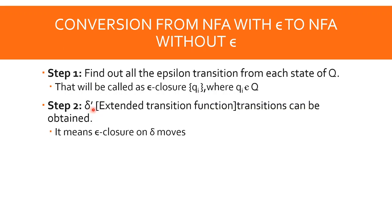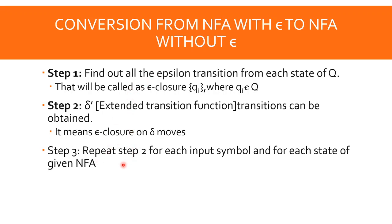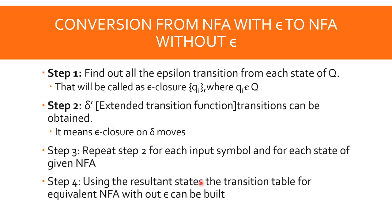Next, delta-dash is the extended transition function. We first learn delta — the transition function — then delta-dash, which is the extended version. Delta-dash transitions can be obtained using epsilon closure on delta moves. Step 3: repeat Step 2 for each input symbol and for each state of the given NFA. Using the resultant states, the transition table for the equivalent NFA without epsilon can be built.